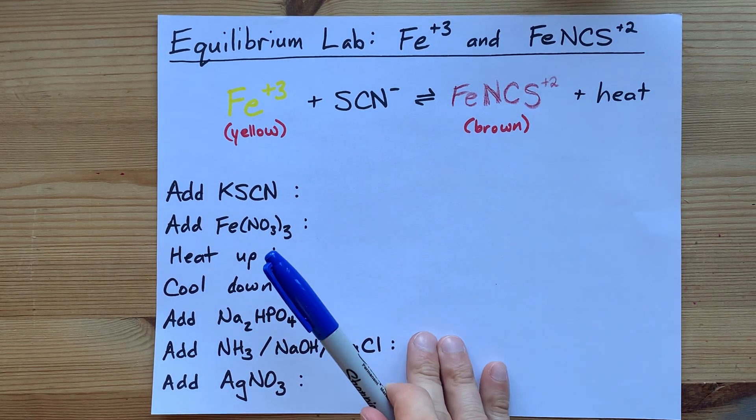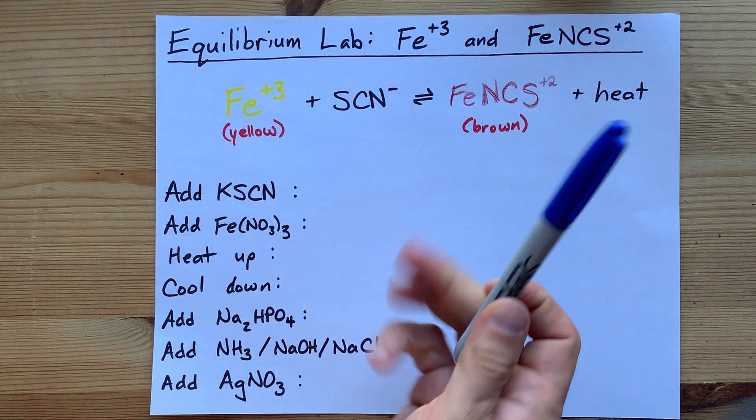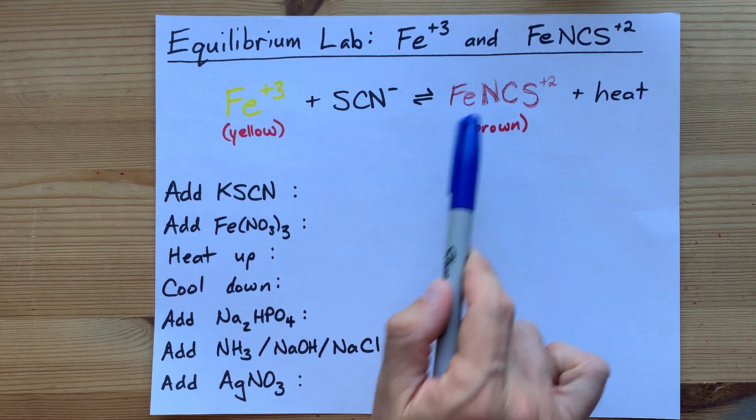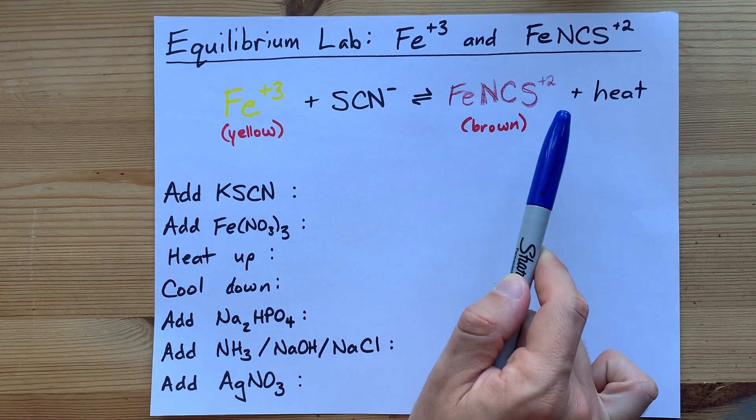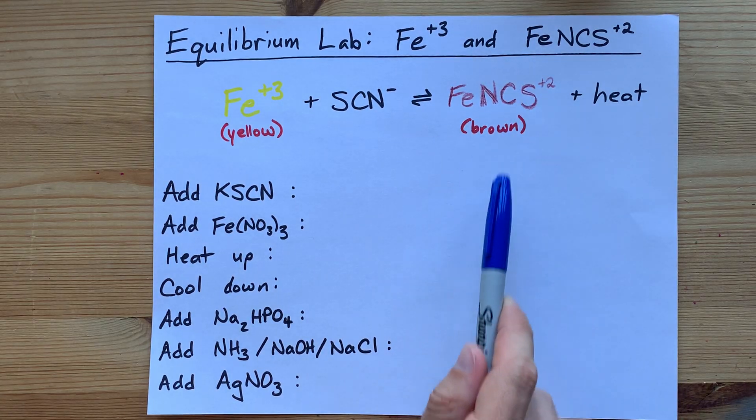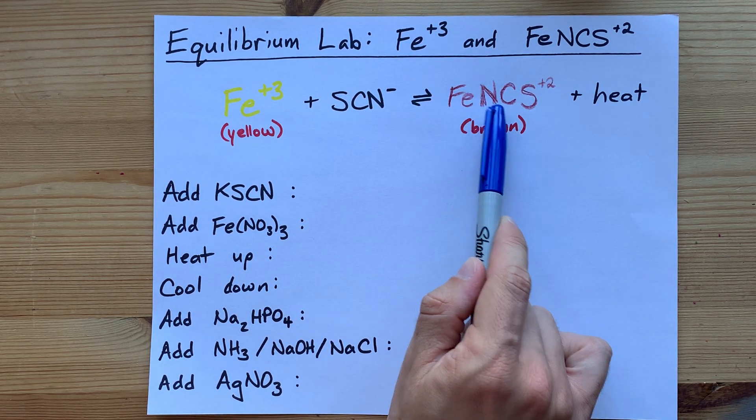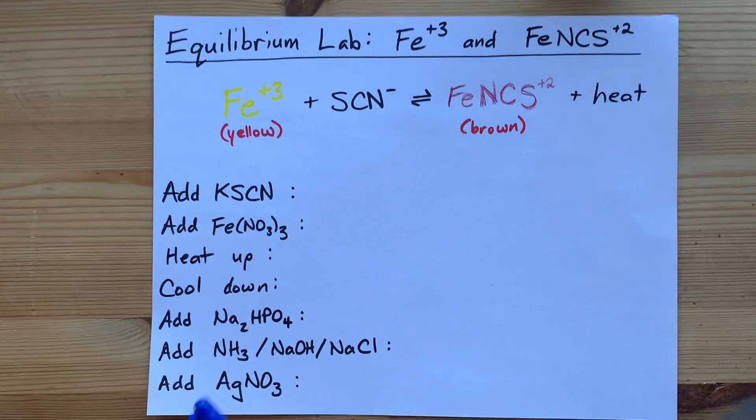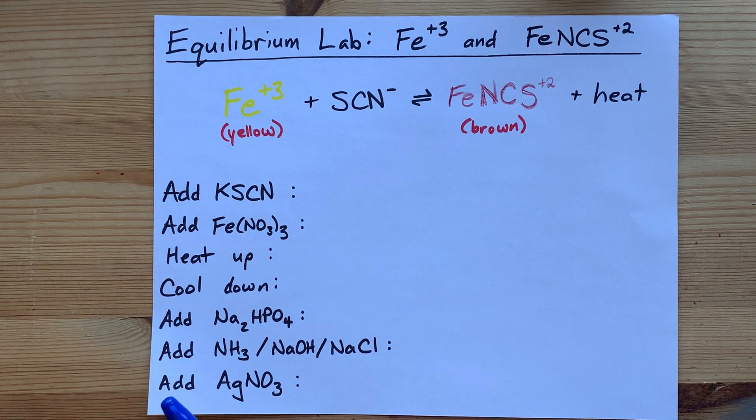The two of them will combine together to make a complex FeNCS plus 2, although some teachers will write it FeNCS plus 2, because the lone pair on the nitrogen is what is attracted to the iron atom.